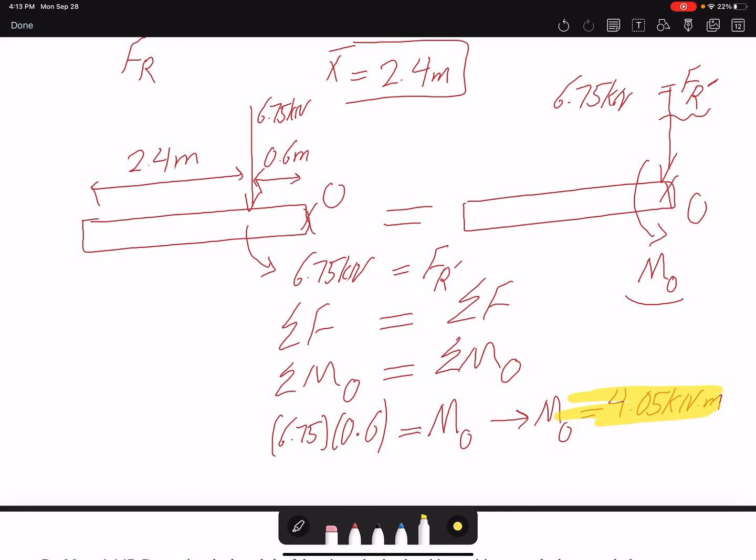So that's the moment acting at point O and that's the force. The force was the same regardless of where we want to place it in terms of magnitude, but when we change the location of force we are changing the moment of the system. Because moment is the force multiplied by the moment arm, if the moment arm changes we have to make up for that change by adding a moment to make the two beams equivalent.